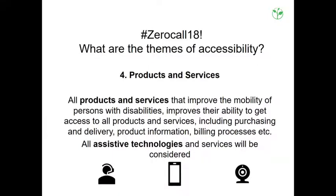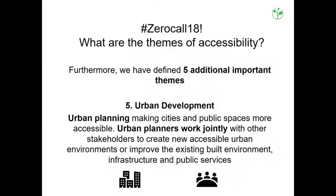The fourth topic is general products and services — any product or service which has to be made accessible for people with disabilities, including purchasing and delivery, product information, billing processes and so forth. Under this point, assistive technologies and services will also be considered.